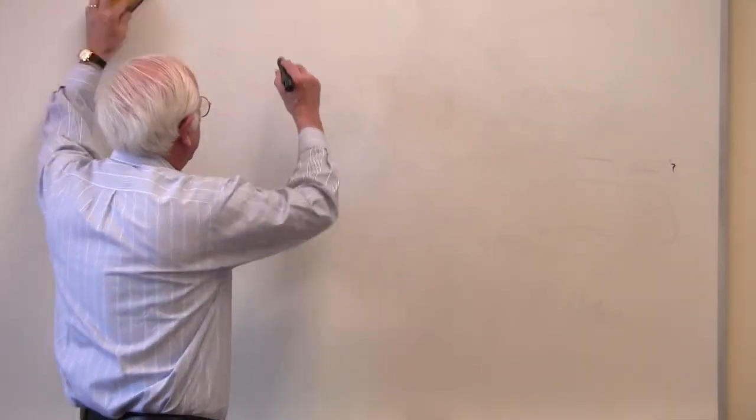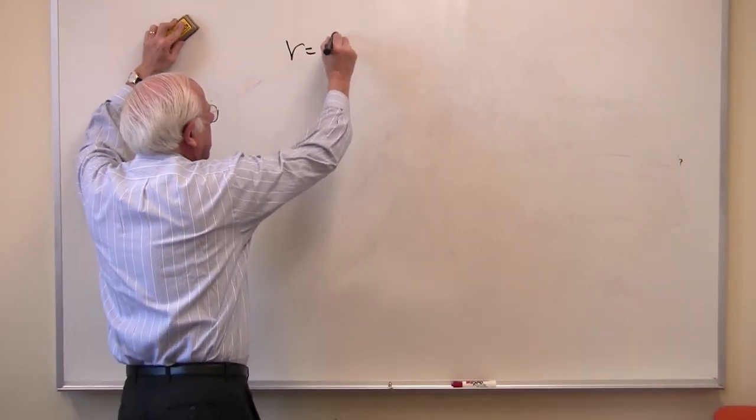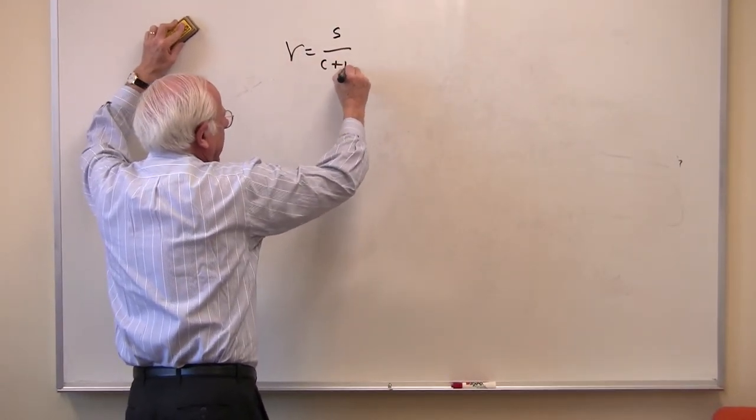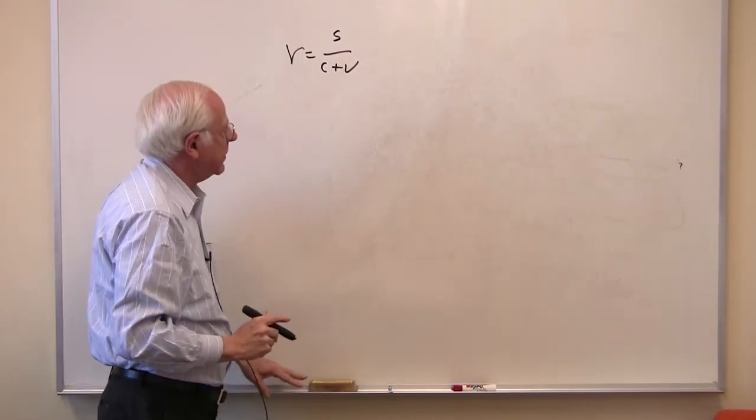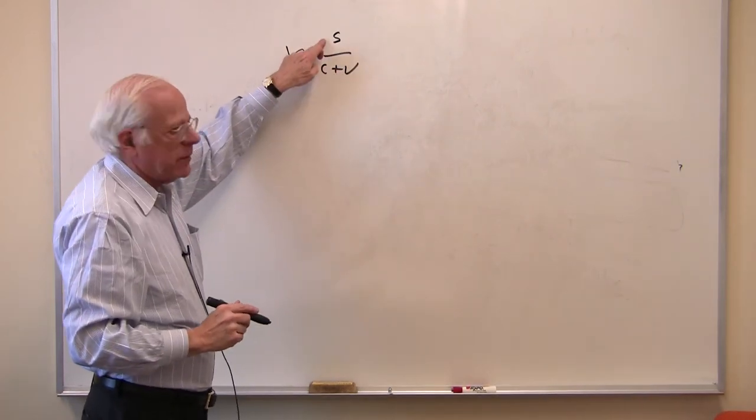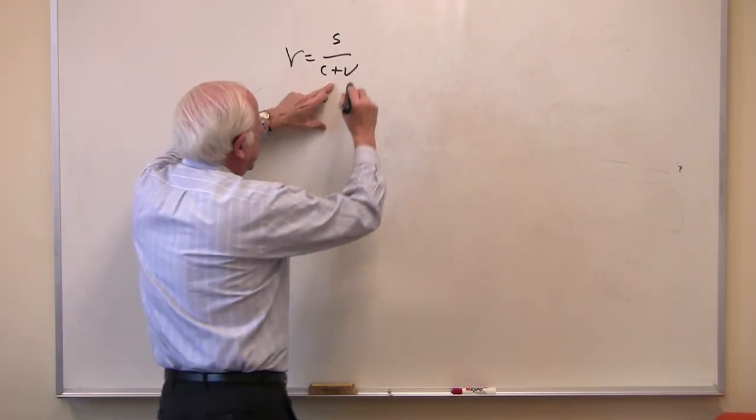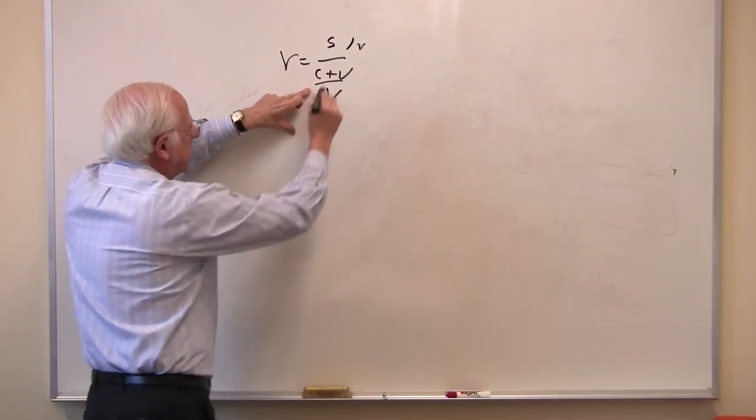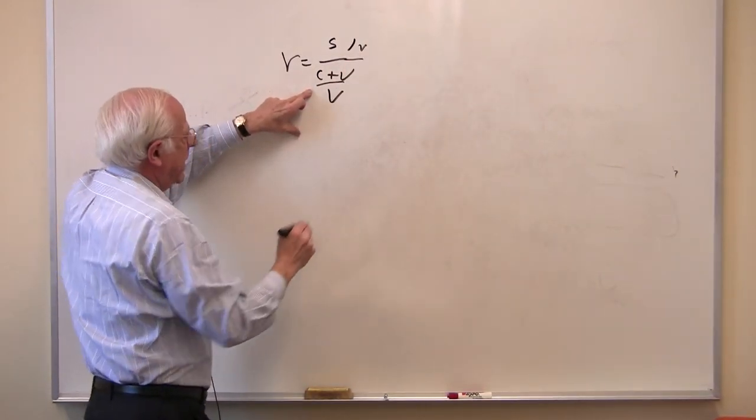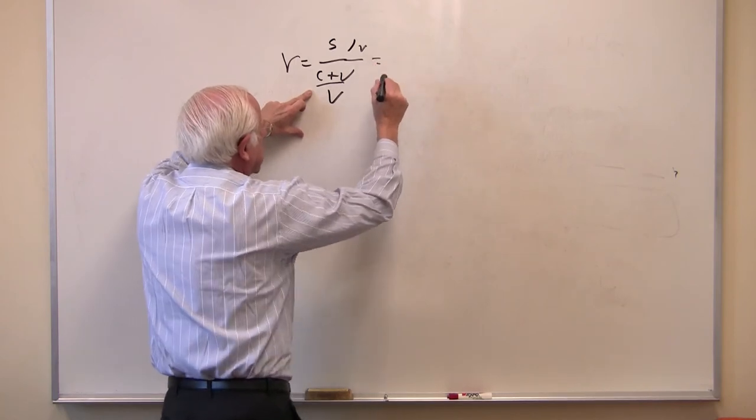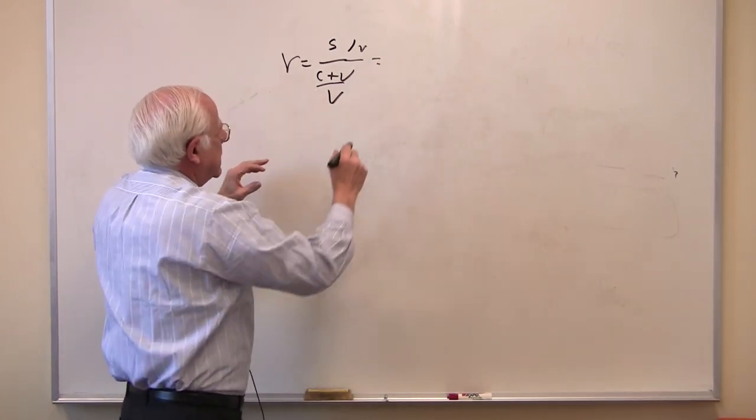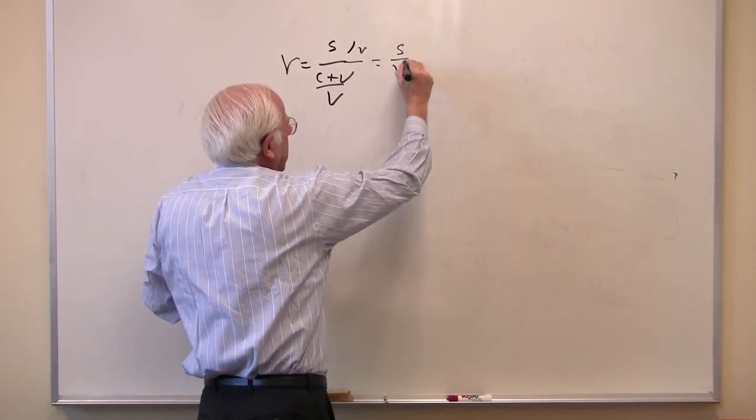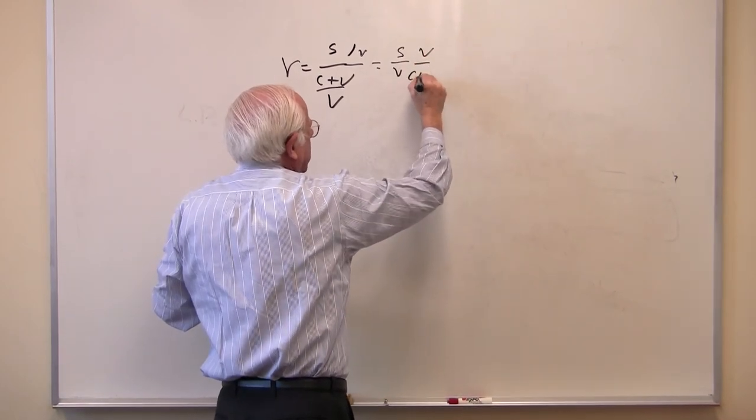So let me start with the rate of profit here. The rate of profit is surplus divided by the cost of capital. Divide the numerator and denominator by the value of labor power. So I'm going to divide the numerator and denominator by same V. And I'm going to rewrite this then as S over V, V over C plus V.